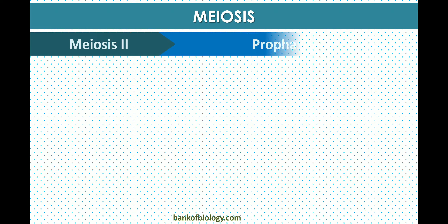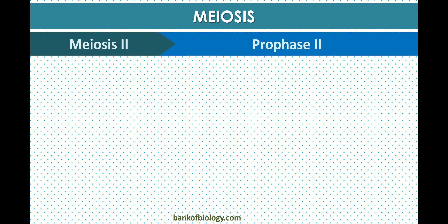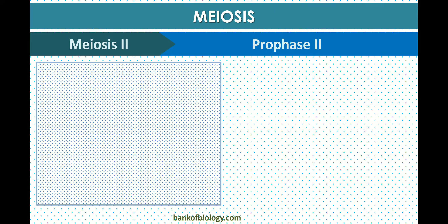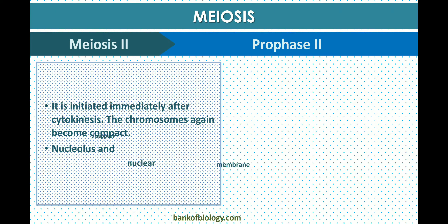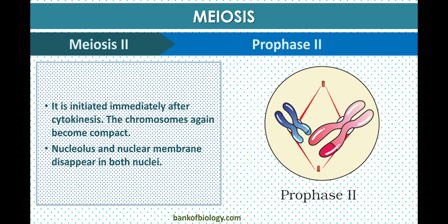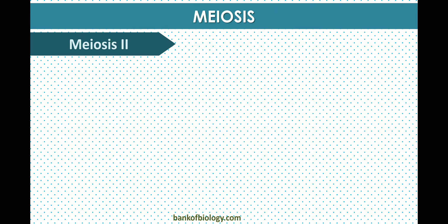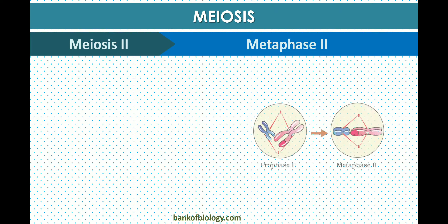In prophase two, it is initiated immediately after cytokinesis. The chromosomes again become compact, and the nuclear membrane disappears in both nuclei.